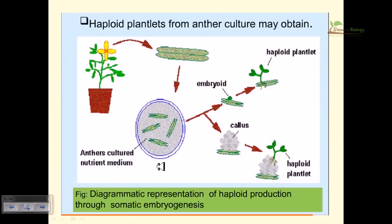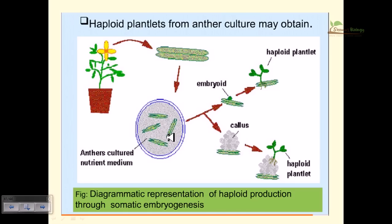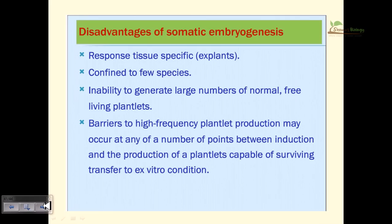Haploid production through somatic embryogenesis via anther culture: the anther is placed into nutrient media and starts to grow and produce embryos. The anther can either directly produce embryos — going through direct mode of embryogenesis — or produce callus first, going through indirect embryogenesis.